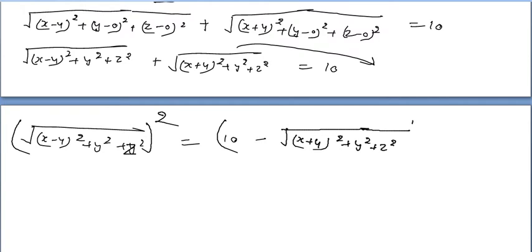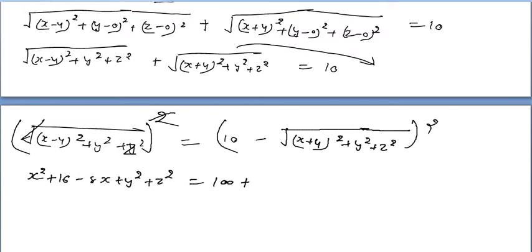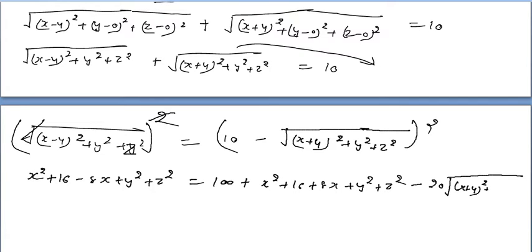Squaring both sides: (x² + 16 - 8x + y² + z²) = 100 + (x² + 16 + 8x + y² + z²) - 20√[(x+4)² + y² + z²]. Now x², y², z², and 16 cancel from both sides.